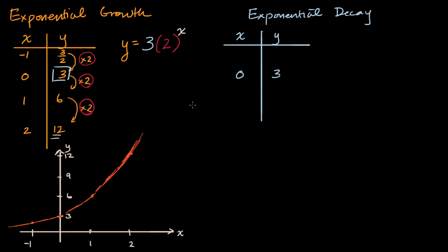But instead of doubling every time we increase x by one, let's go by half every time we increase x by one. So when x is equal to one, we're going to multiply by one half, and so we're going to get to three halves. And then when x is equal to two, we'll multiply by one half again. And so we're going to get to three fourths. And so on and so forth.